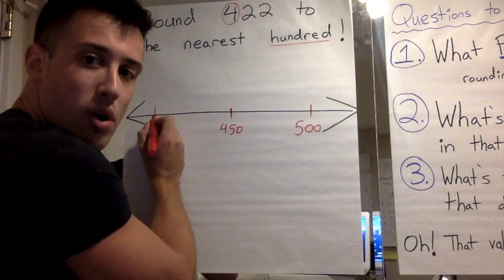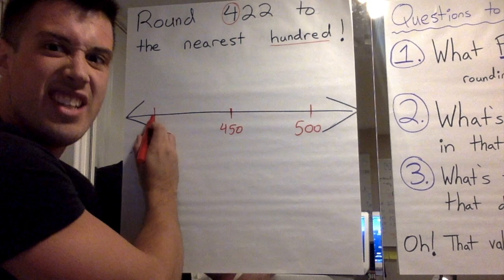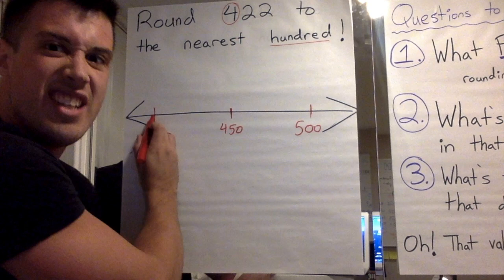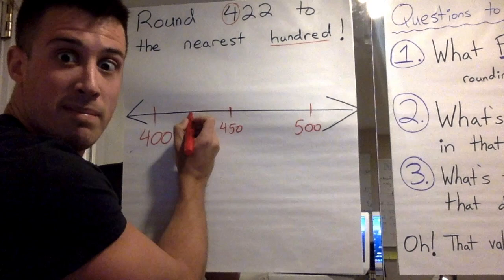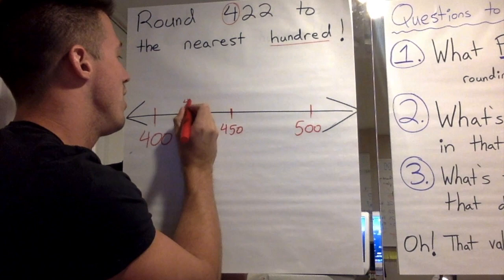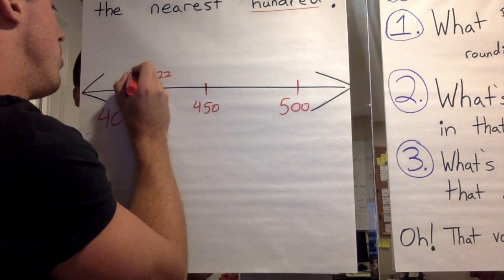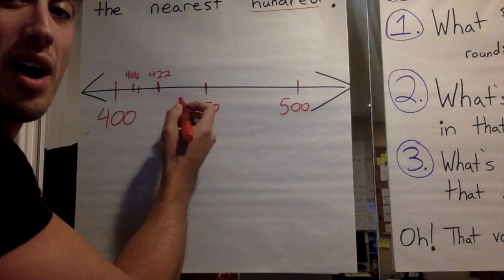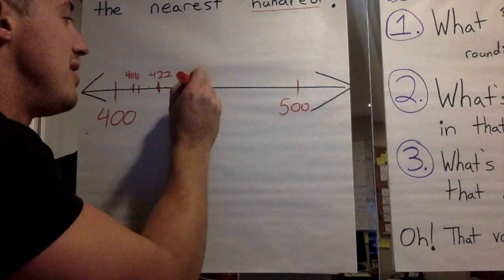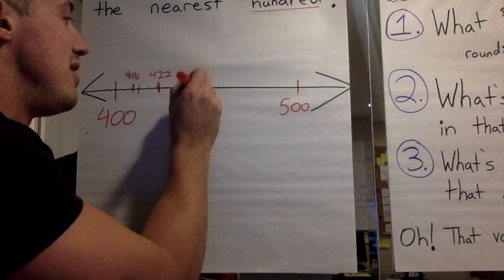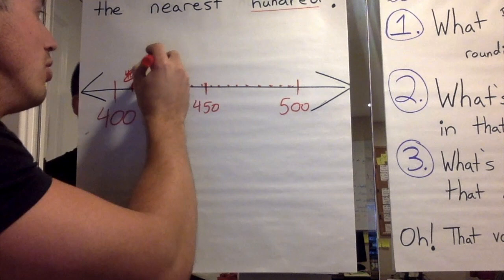Now, where does 422 go on this number line? I'm going to start here at 400 and move along. When you think I've reached the point where I should plot 422, take yourself off mute and yell 'stop' as loud as you can. I think this is where 422 should go. There's 400, then 401, 402 — we keep going all the way up, but we just visualize that in our head. There would be 100 dots in there otherwise.